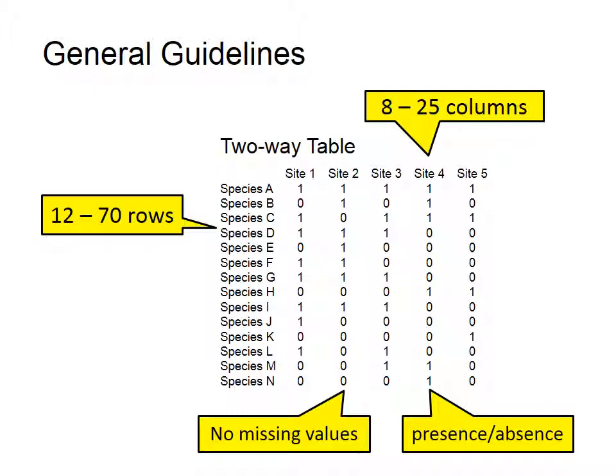The example used here had a very small two-way table. Most analysis projects use larger tables, such as those with 12 to 70 rows and 8 to 25 columns. Note that you cannot have any missing values — the numbers in the table are the presence or absence of each item.